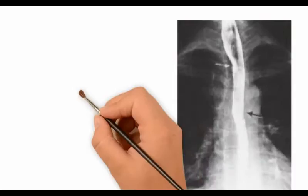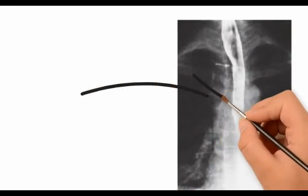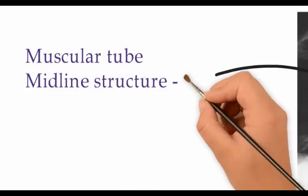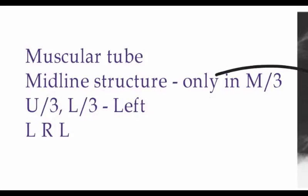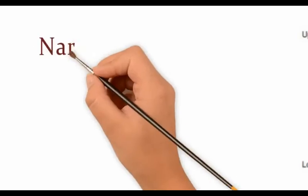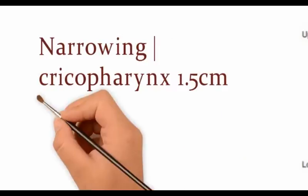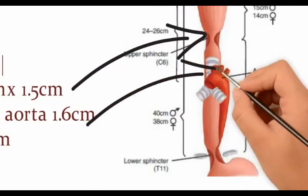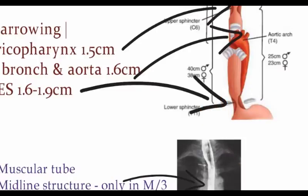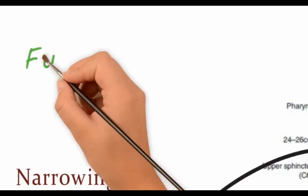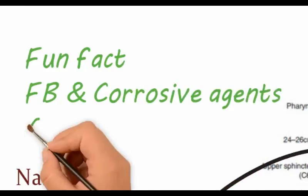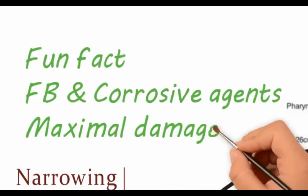The esophagus is a muscular tube that lies in the midline only in the middle third; the upper and lower thirds are to the left. The mnemonic is like the march past: left, right, left. Three natural narrowings are seen: at the cricopharynx measuring a maximum of 1.5 cm, at the left bronchus and aorta measuring a maximum of 1.6 cm, and at the lower esophageal sphincter measuring a maximum of 1.9 cm. Foreign bodies get impacted at these narrowings, and corrosives cause maximum damage here due to sluggish flow.